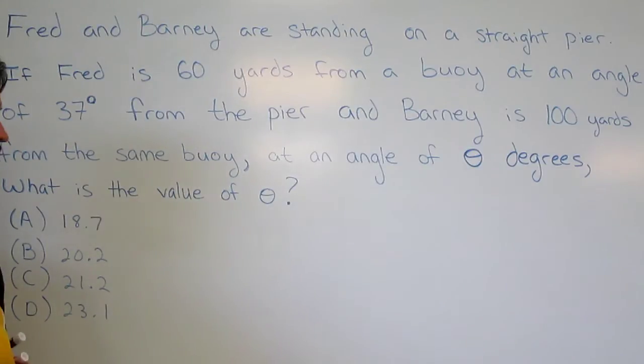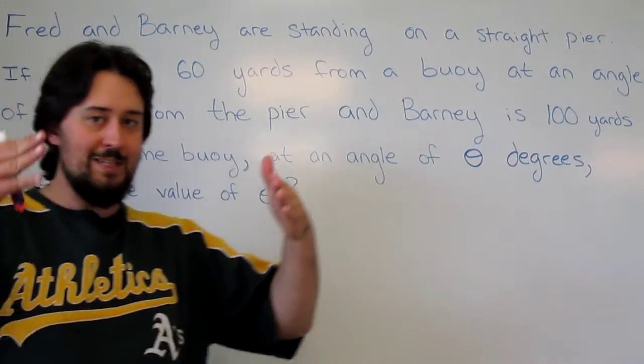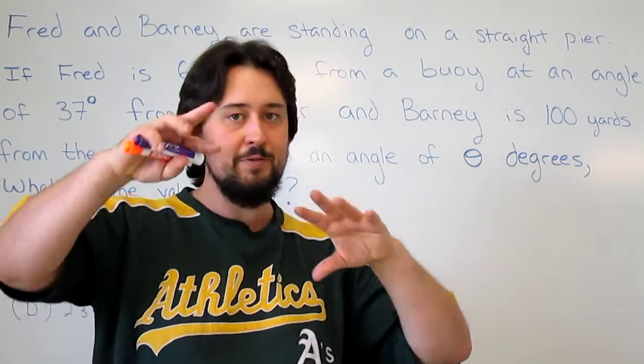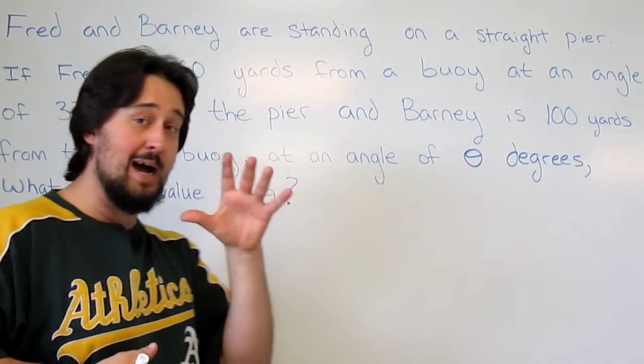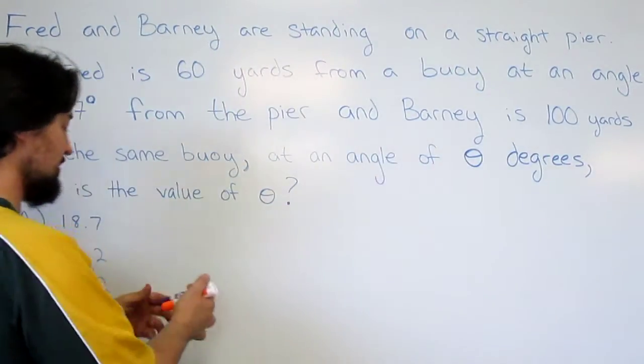It's a classic C-set question: two people from different angles looking at something with two different distances. Knowing most of these parts, we're looking for one part over the other. It's either a law of sines or law of cosines question, so let's just lay it out to see.